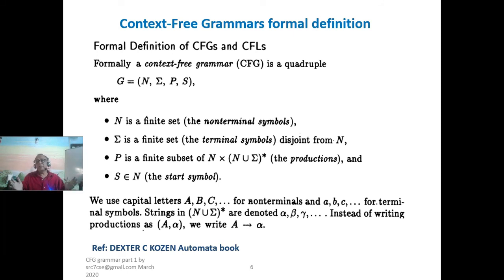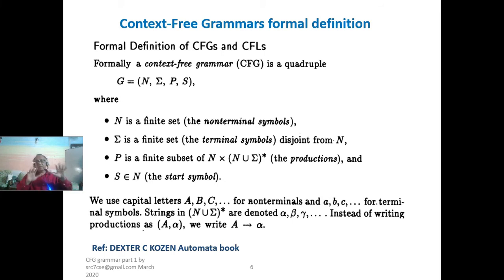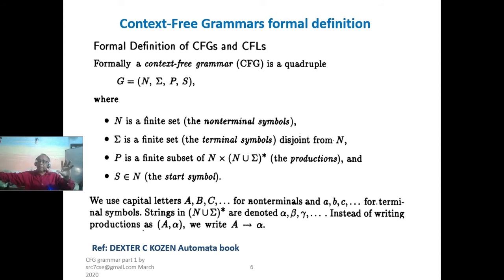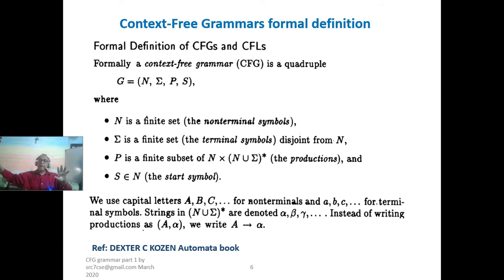Context-free grammar may be divided into two: deterministic context-free grammar (like a^n b^n, balanced parenthesis) and non-deterministic context-free grammar. A grammar is a four-tuple: non-terminals (V), terminals (sigma), production rules (P), and start symbol (S). The relationship between language and grammar: a language can have many grammars, and a grammar gives only one language. A language may have 10 grammars — nine ambiguous and one unambiguous — and we say the language is unambiguous with that grammar.